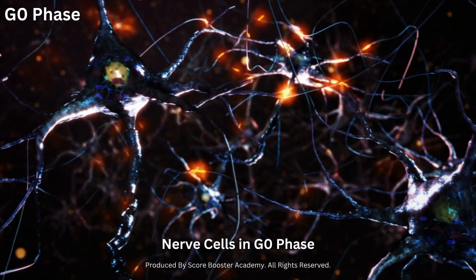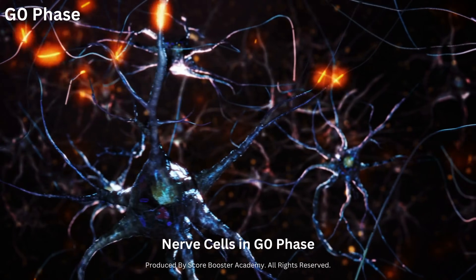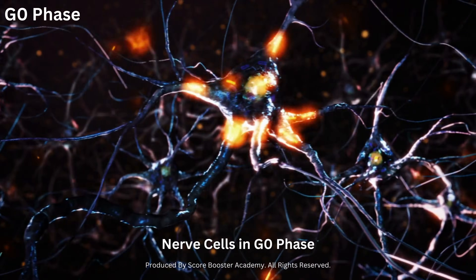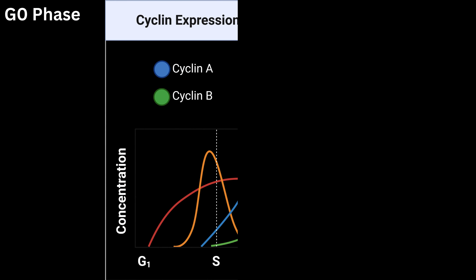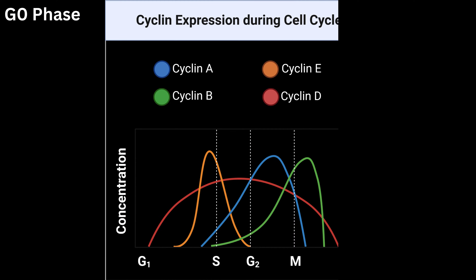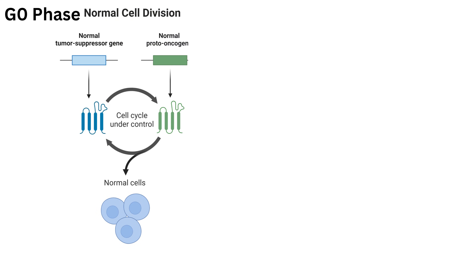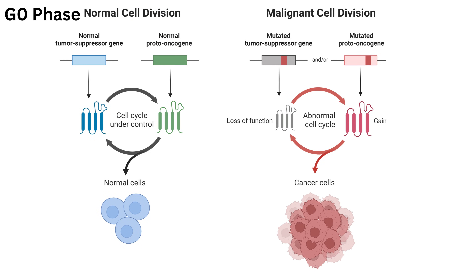Precise regulation of the cell cycle is crucial to prevent uncontrolled division and the formation of tumors. Cyclins, cyclin-dependent kinases (CDKs), and tumor suppressor genes play key roles in maintaining balance and fidelity.